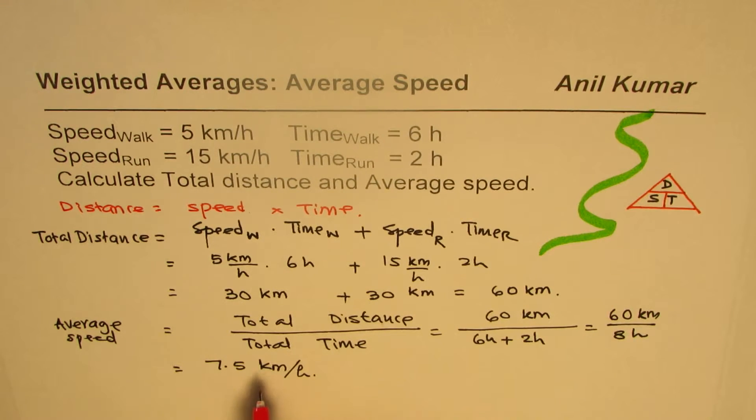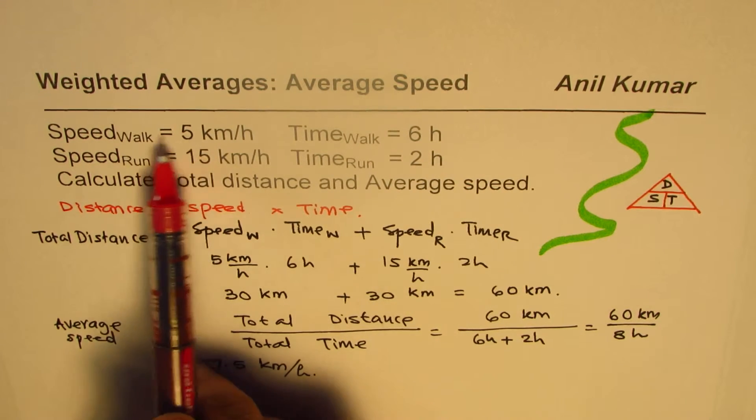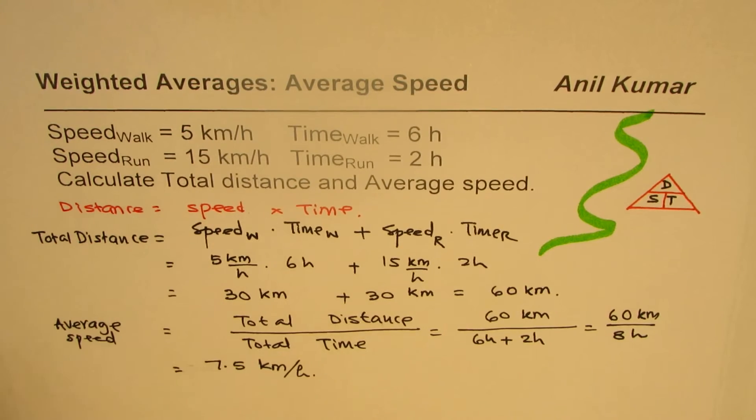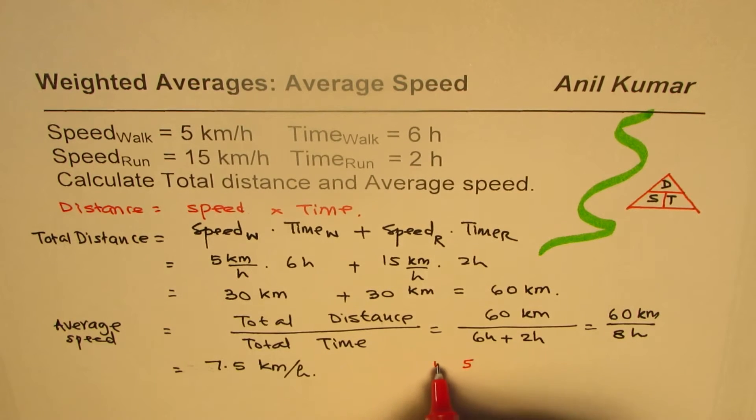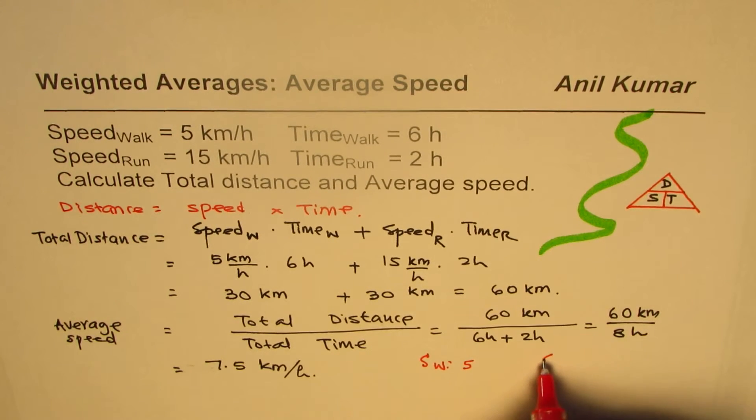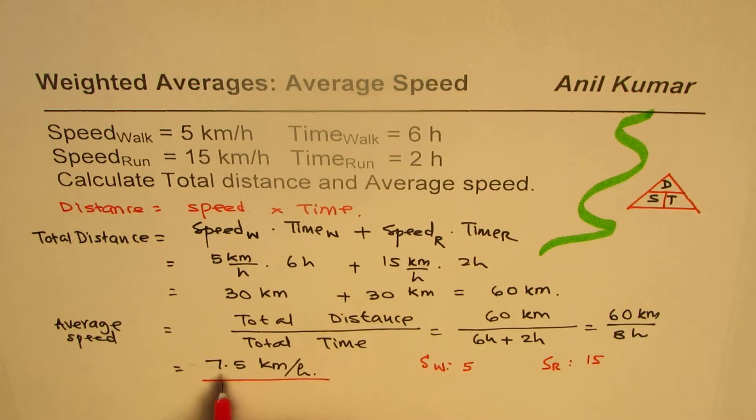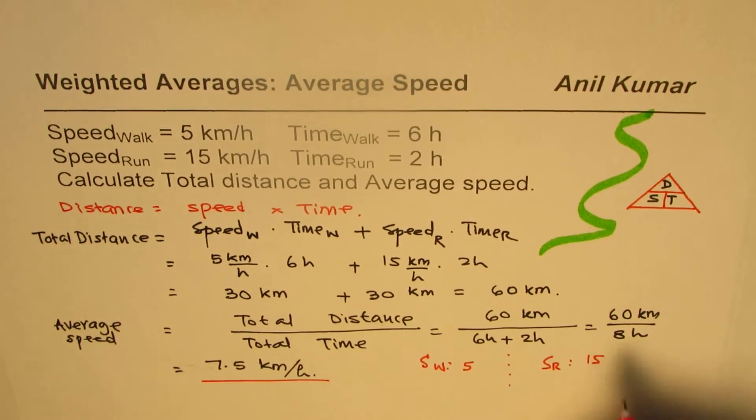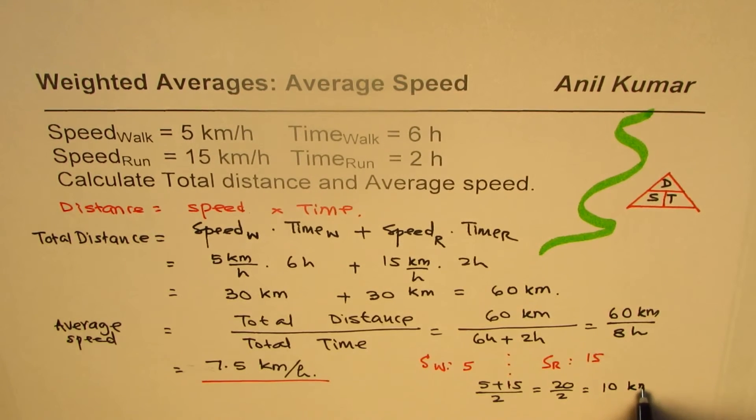Now if you notice, what we are given here is speed of walking is 5 and running is 15 kilometers, so two different speeds. But the average speed we calculated is 7.5 kilometers. It is not the center value. If I add them up and divide by 2, what do I get? 5 plus 15 divided by 2, that is 20 divided by 2, is 10 kilometers per hour.